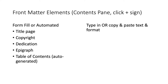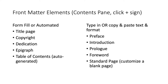For the next group of front matter elements, you can type them in directly into the page that appears — it's a blank page — or you can copy and paste text from a Word file or some other text-based file. These elements include the Preface, Introduction, Prologue, and Forward. They also offer a blank standard page if it doesn't fit into any of these categories and you want some sort of custom page in your front matter.